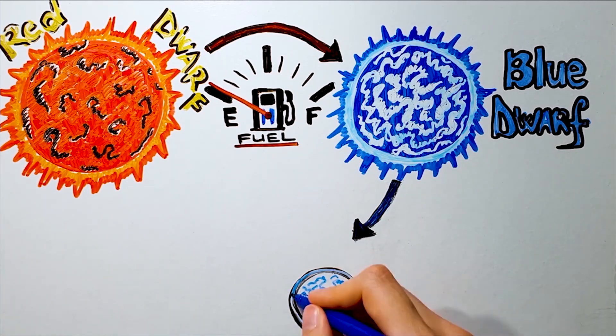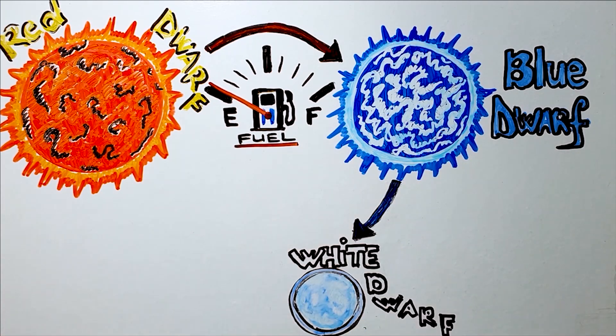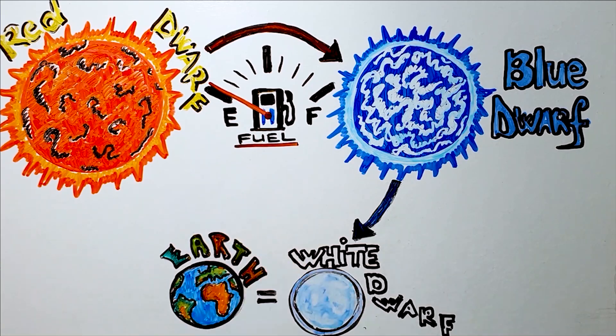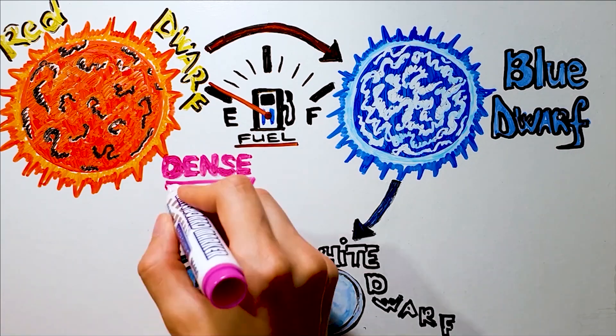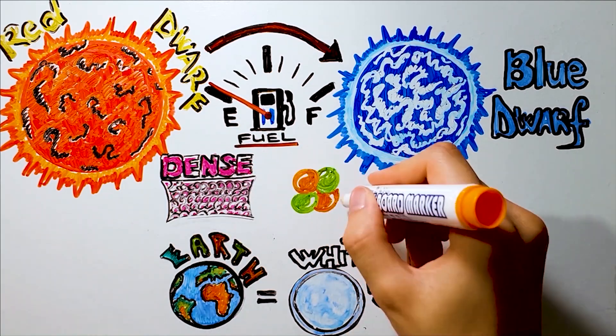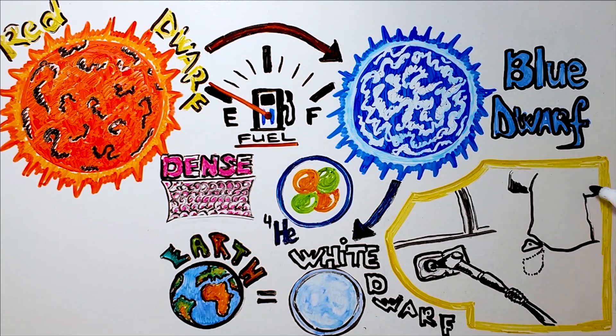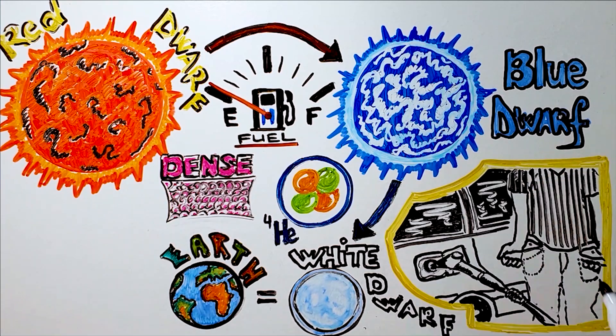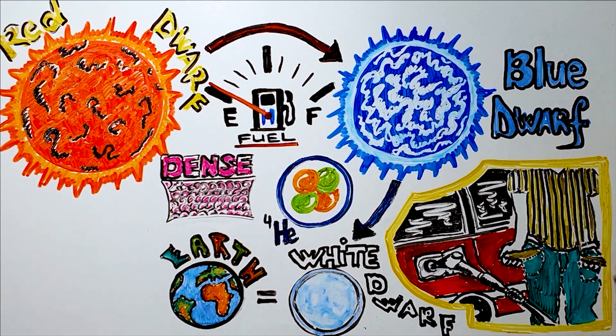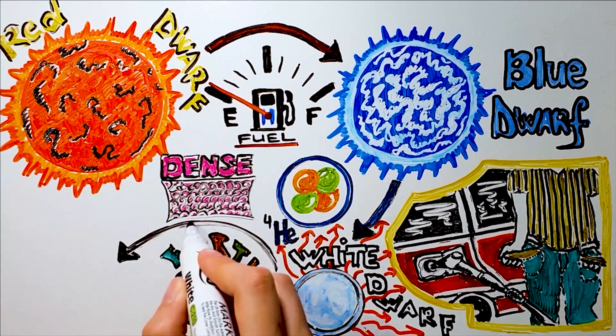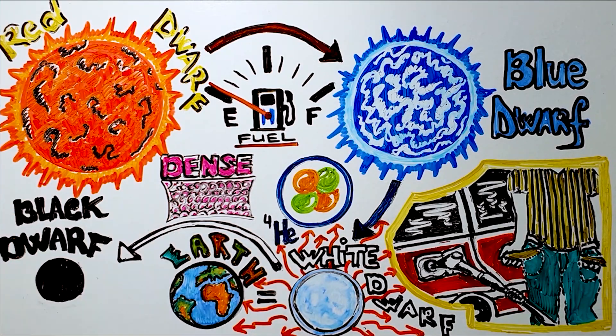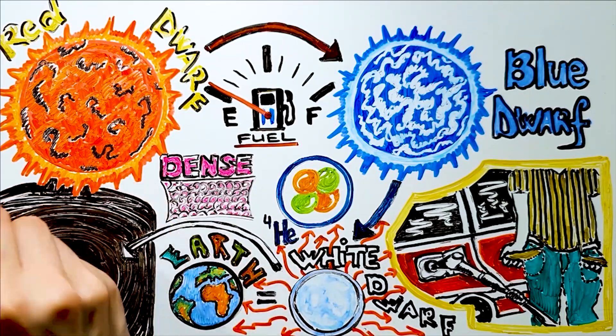After there's no more fuel to burn, it's transformed into a white dwarf, an object as small as earth, packed very densely and composed of degenerate gases, mostly helium-4 nuclei. Having no more source of energy, it will cool extremely slowly over trillions of years until it becomes its final form, a cold, black dwarf, disappearing into the darkness of space.